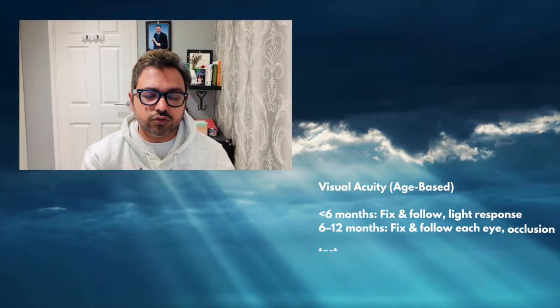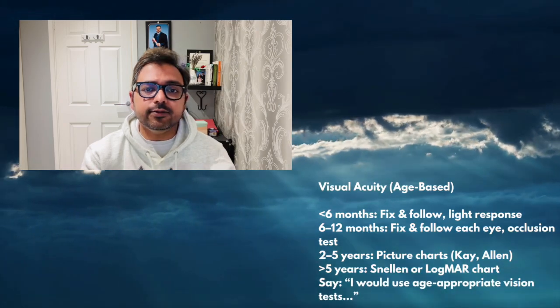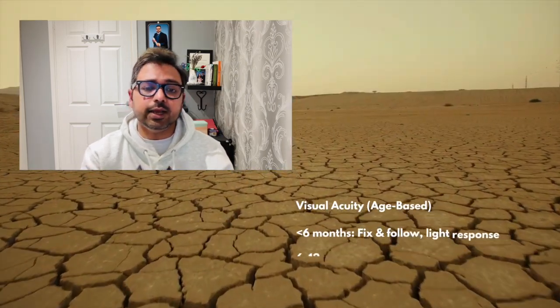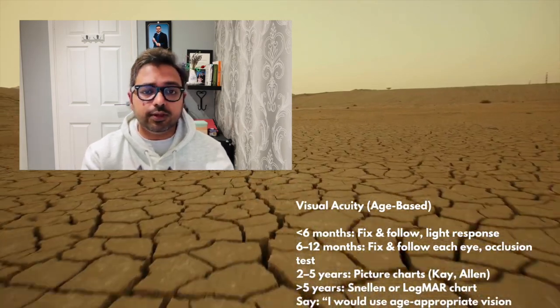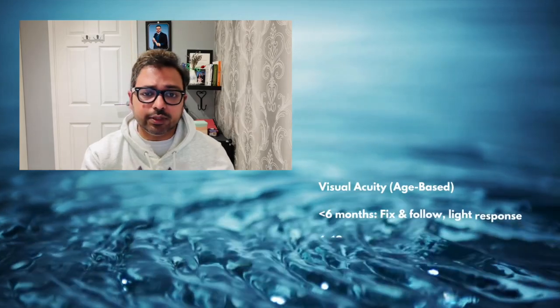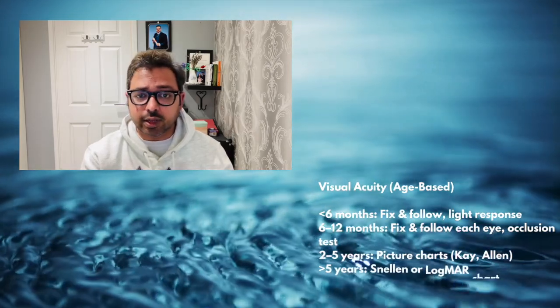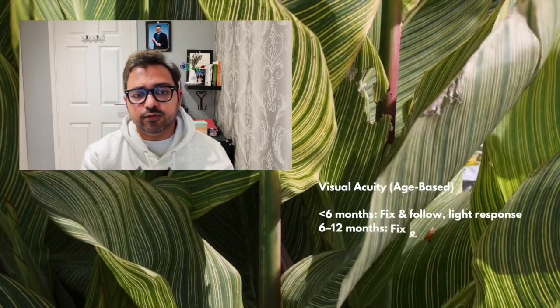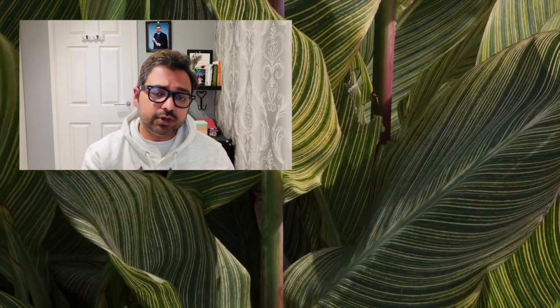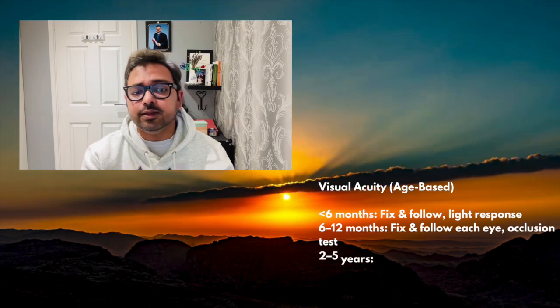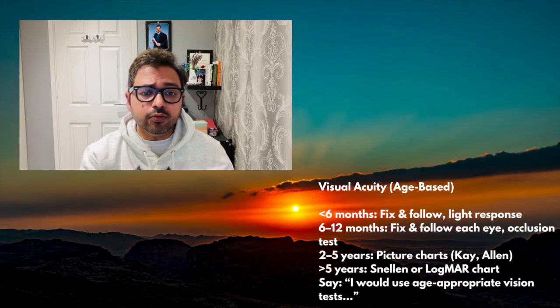Start with visual acuity — this is the first test, and it is done according to age. For less than six months, check fix-and-follow and light response. Between six to twelve months, check fix-and-follow in each eye and try the occlusion test. Between two to five years, use a picture chart like Kay or Allen's chart. Above five years, use the Snellen or Logmar chart. You should say 'I would use an age-appropriate vision test.'